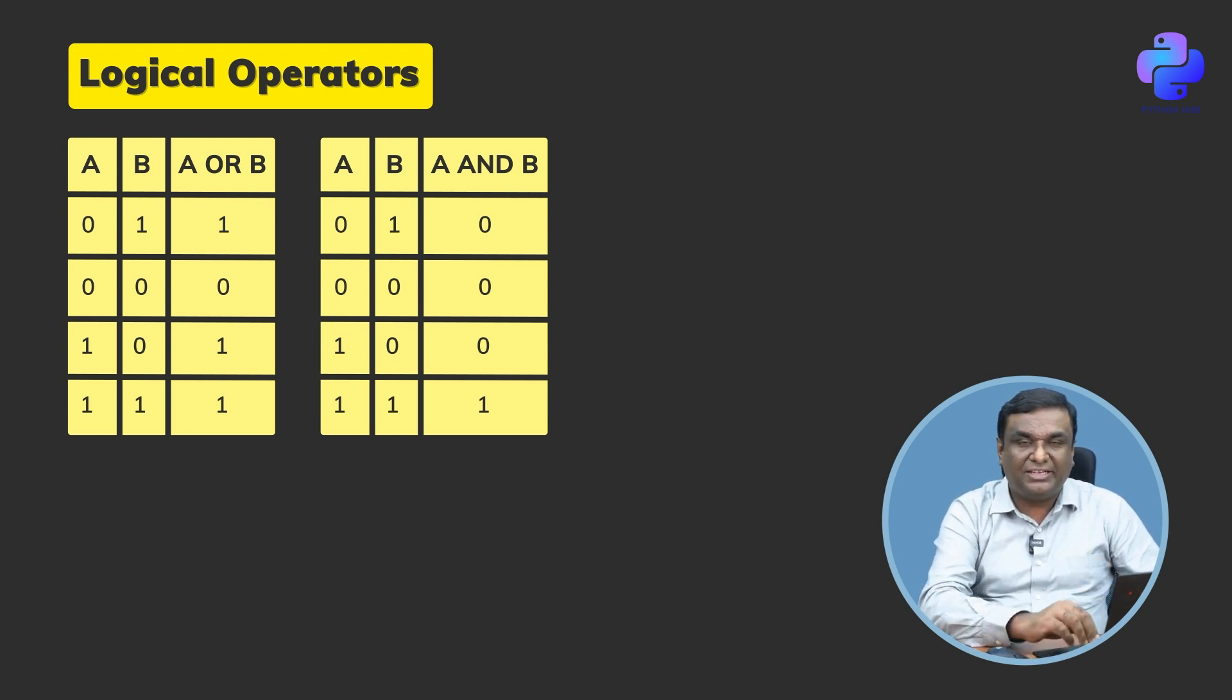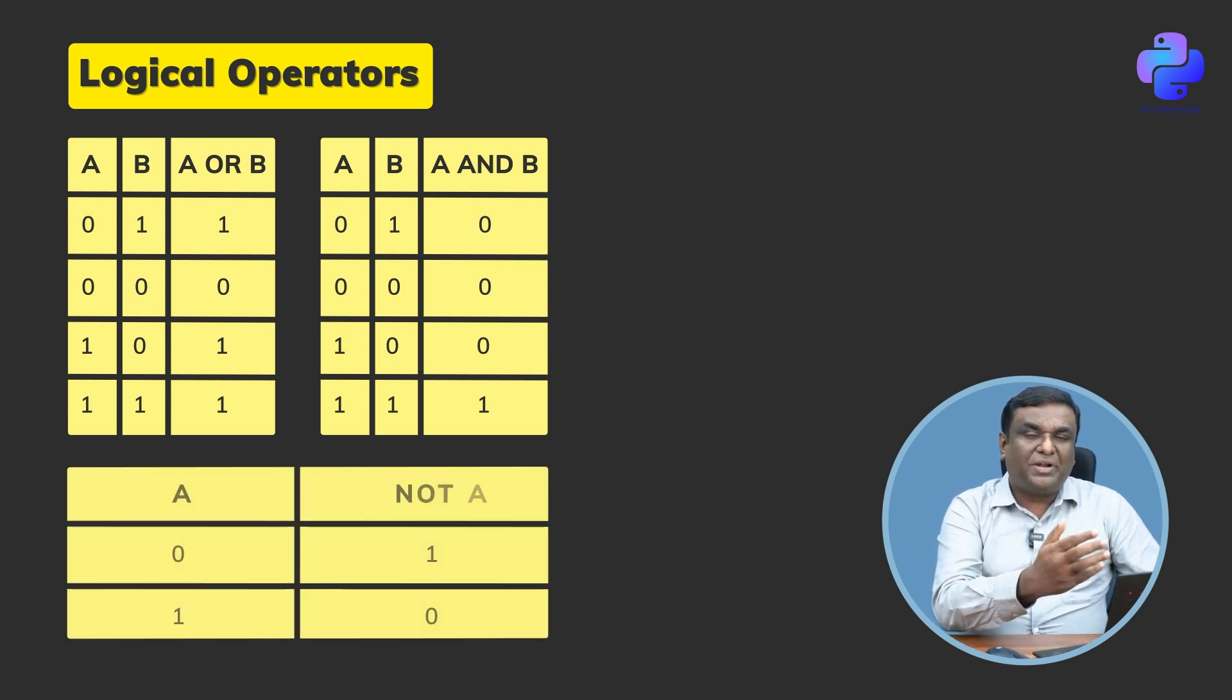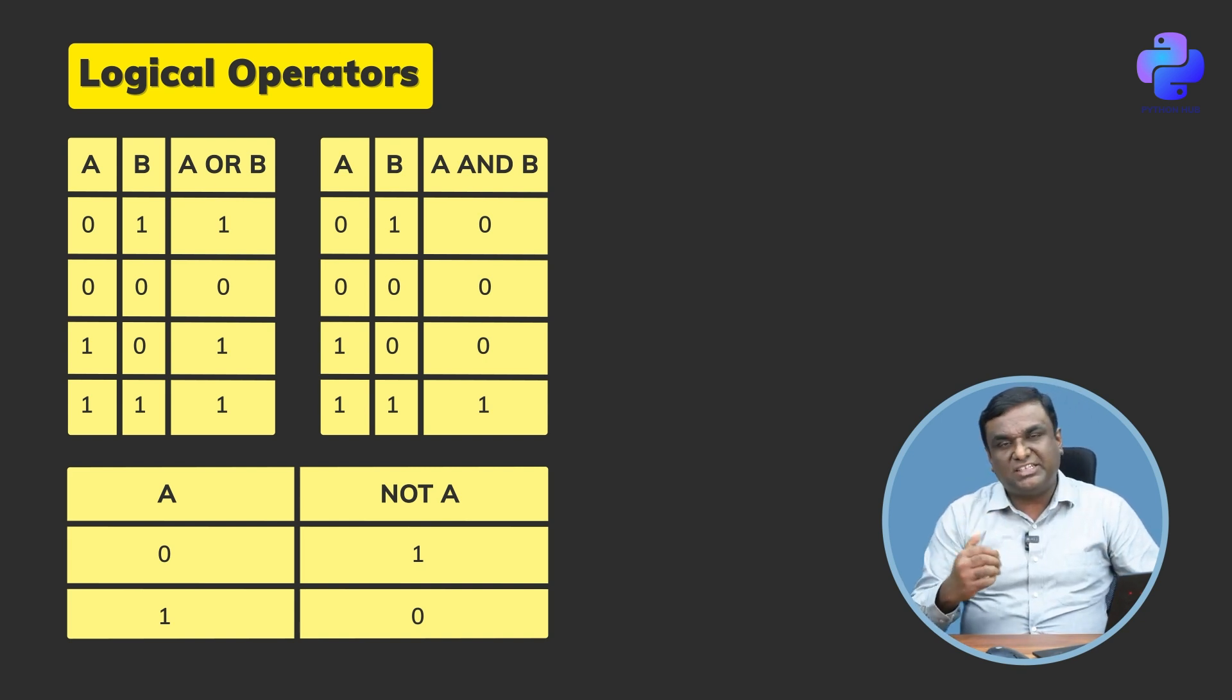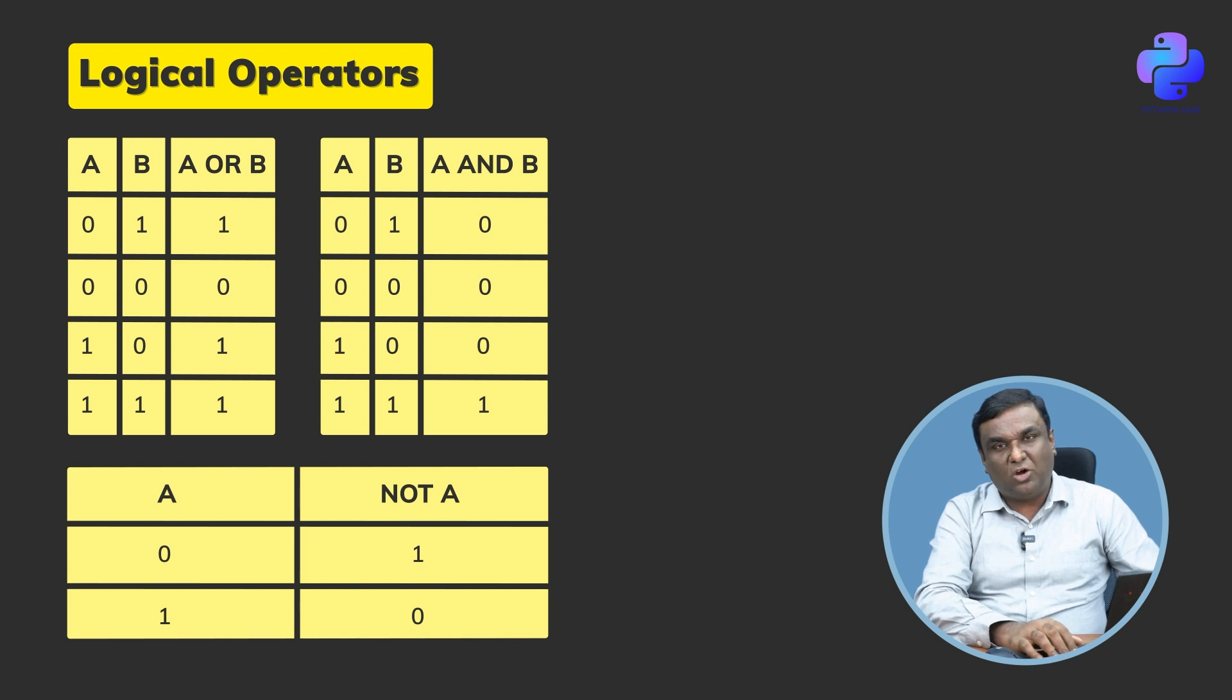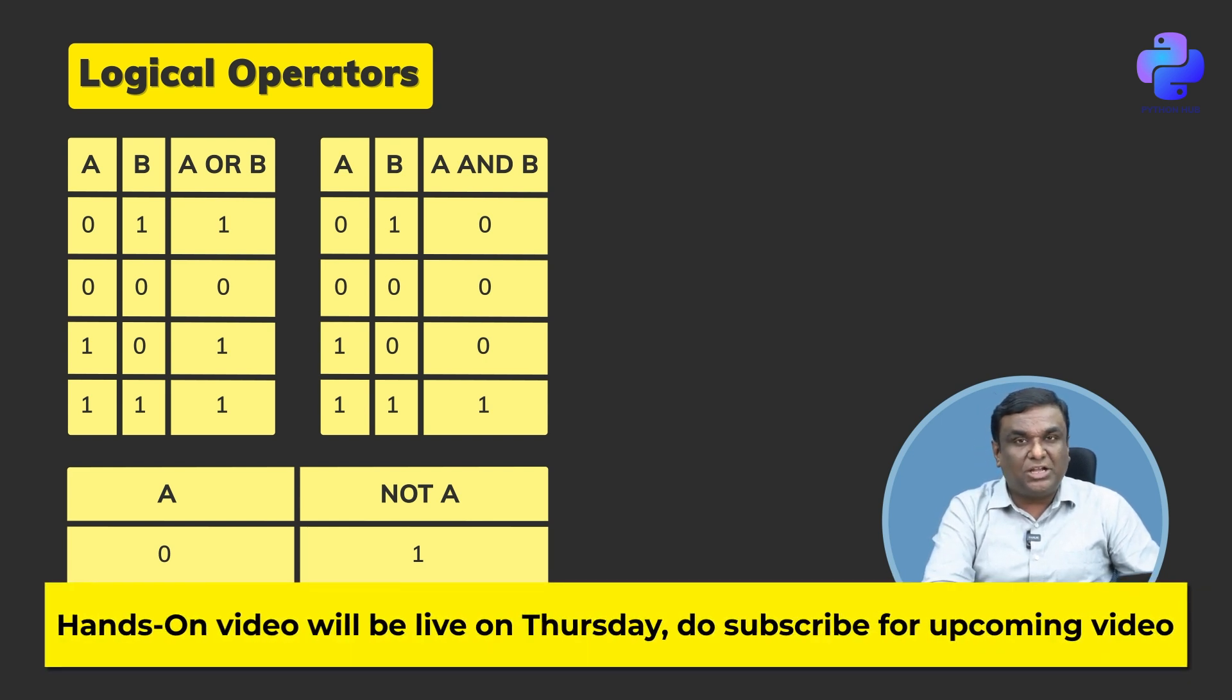NOT operator, as I explained to you: if you are giving zero as an input you get one as an output. If you are giving one as an input, you are getting zero as an output. This is how the logical operators work.